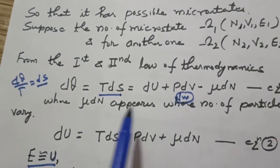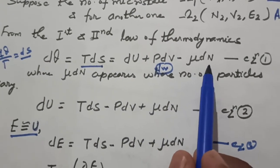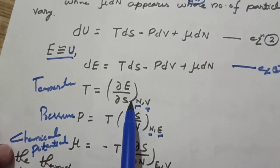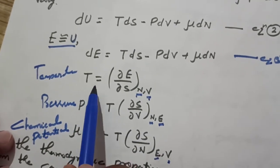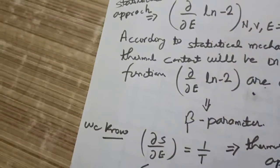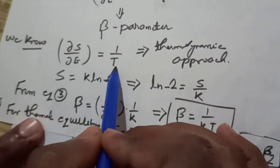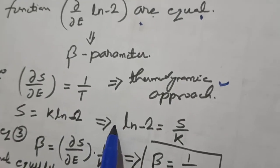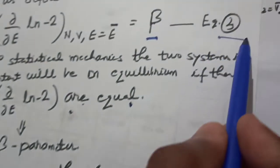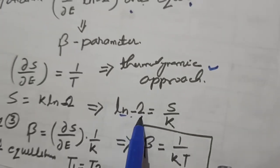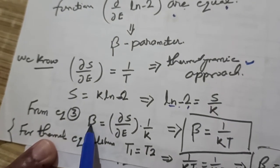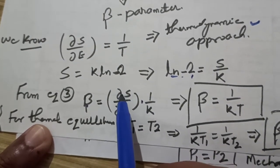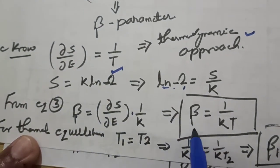From the combined first and second law, dQ equals TdS equals dU plus PdV minus μdN, we obtained that del S upon del E equals 1 upon T. Since S equals K ln(omega), we have ln(omega) equals S upon K. Substituting this, beta equals (del S / del E) times (1/K) equals (1/T) times (1/K), giving beta equals 1 upon KT.